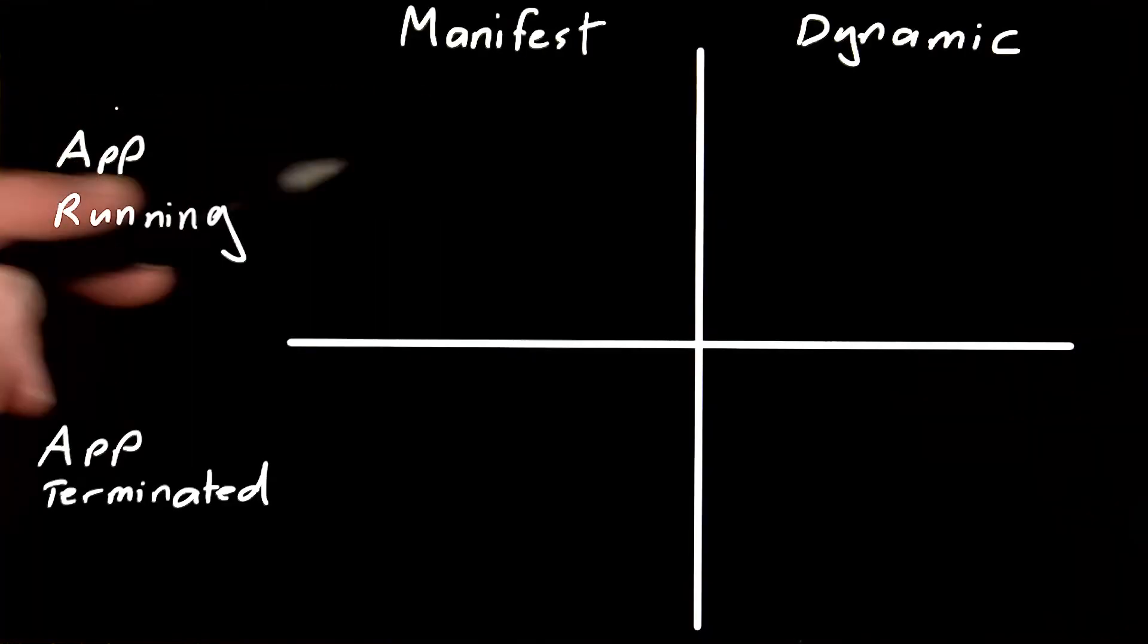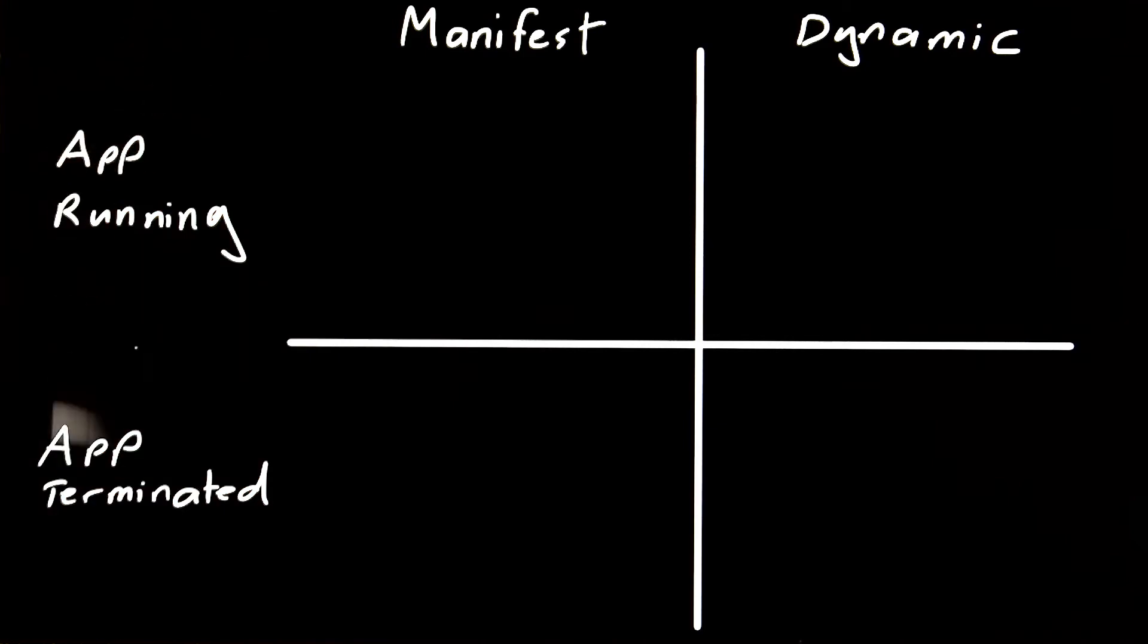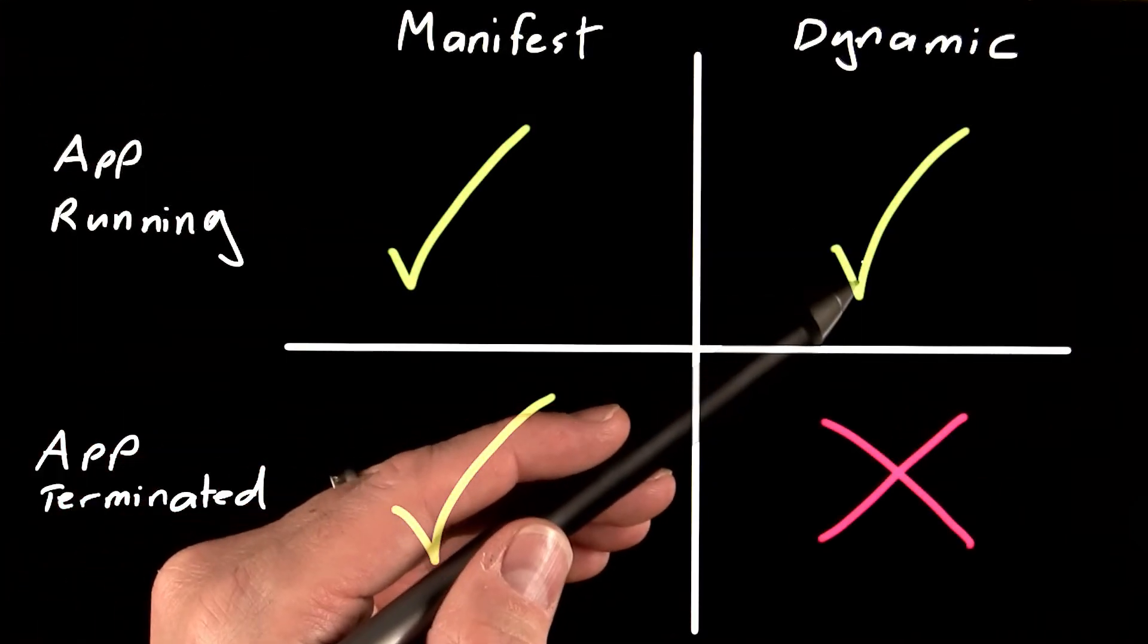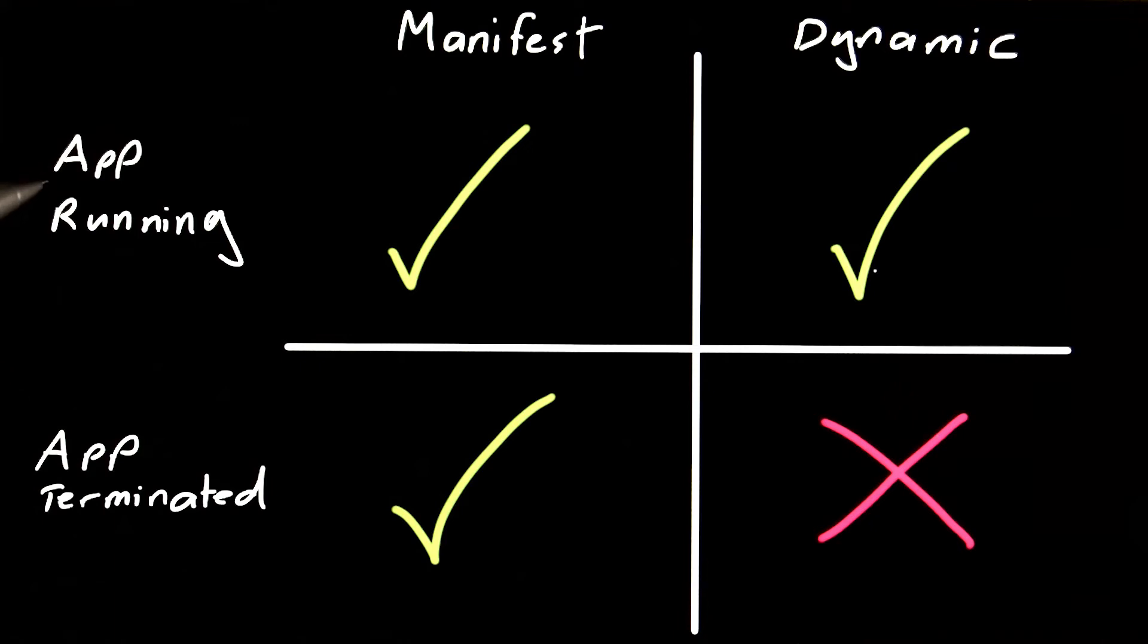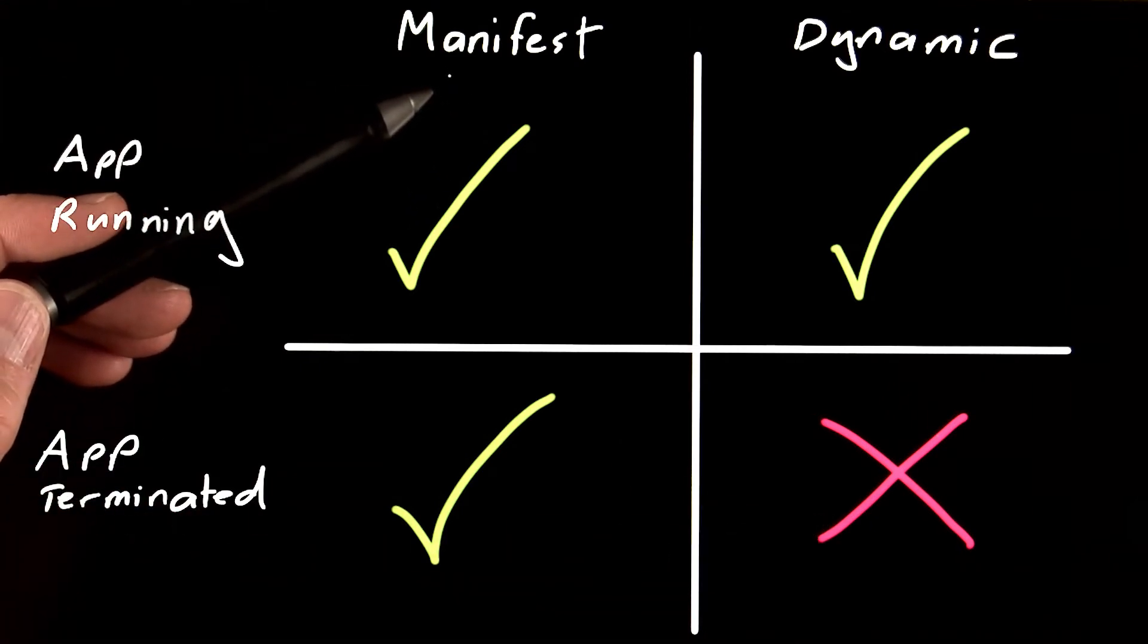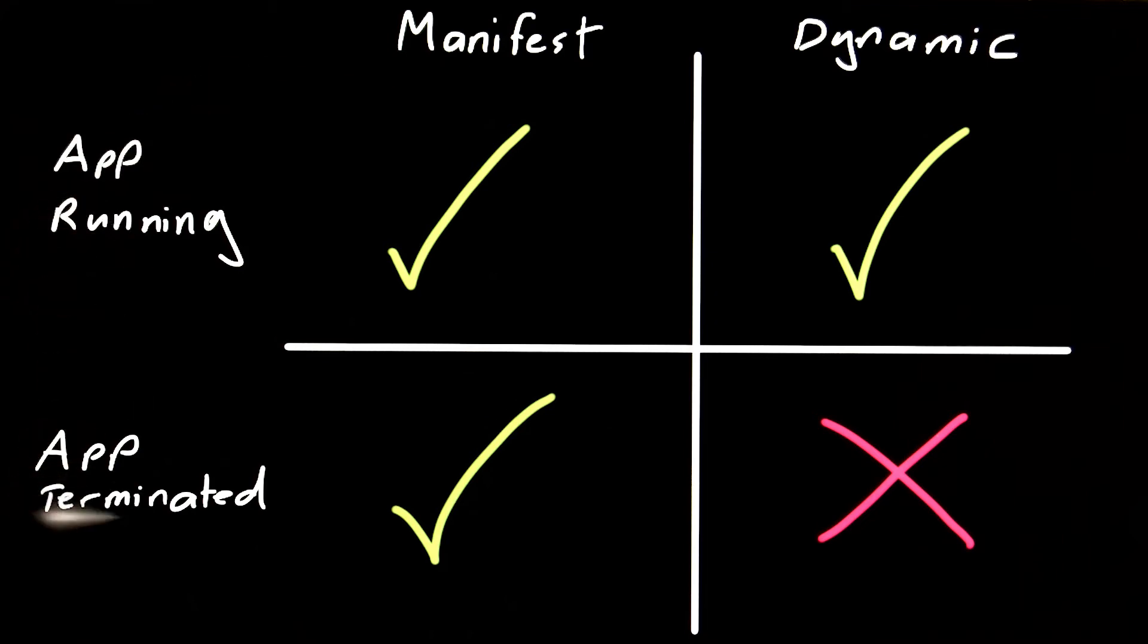The biggest difference between manifest and dynamic receivers is when they're triggered. A programmatically registered receiver will only receive broadcasts while the app is running, while a manifest declared receiver will start your app specifically to receive your broadcasts.